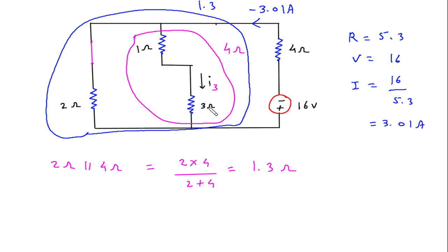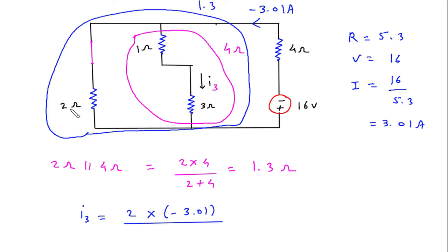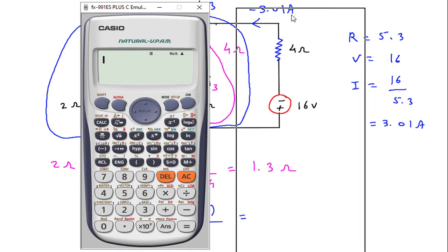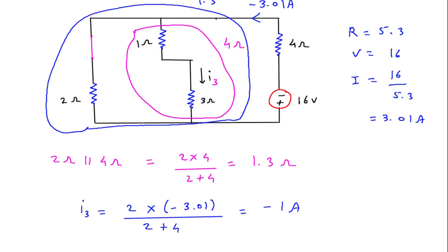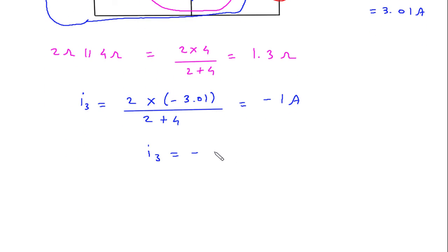Now we apply current division rule to find I3. I3 is equal to the opposite branch resistance, which is 2 Ohm, multiplied by minus 3.01 Ampere, divided by total resistance 2 plus 4. So I3 = 2 × (−3.01) / (2+4) = −1 Ampere.